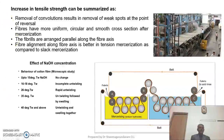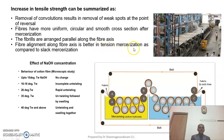Kindly look at the slide. There is an increase in tensile strength during the mercerization process. Removal of convolutions results in removal of weak places present in the material. So fibers become more uniform in structure, with a circular and smooth cross-section after mercerization. The fibrils are arranged parallel to the fiber axis, so fiber alignment along the fiber axis is better in tensed mercerization compared to slack mercerization. This is how the increase in tensile strength is obtained during the mercerization process.